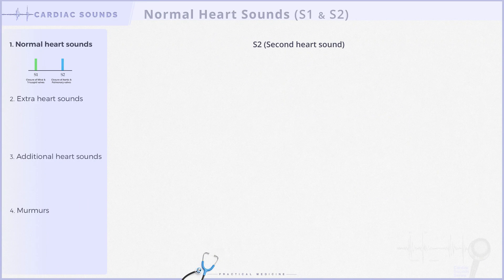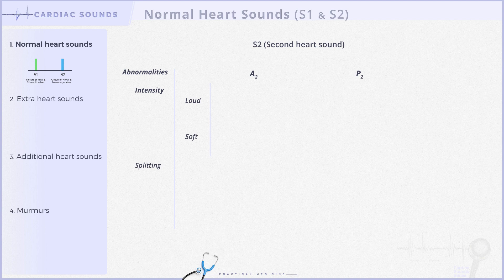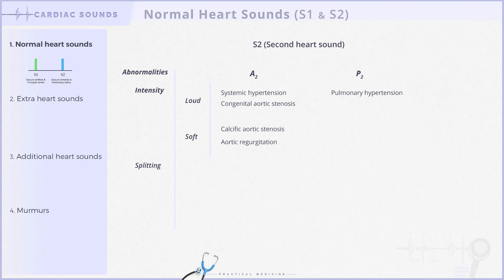Now that we've covered the physiology of S2 and its normal splitting, let's delve into its abnormalities. Abnormalities in S2 can affect its intensity and splitting. Regarding intensity, S2 can become louder or softer — the A2 component becomes louder in systemic hypertension and congenital aortic stenosis, while the P2 component may become louder in pulmonary hypertension. Conversely, A2 softens in calcific aortic stenosis and aortic regurgitation. Softening of P2 is clinically not significant.